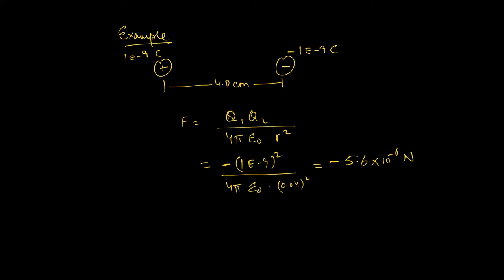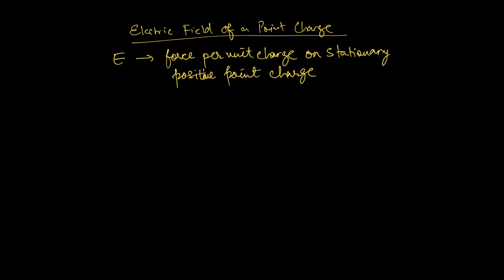Could we now go even deeper and look at the electric field of a single point charge? Let's start with a reminder that the electric field strength — which we covered in the first video of this chapter — is defined as the force per unit charge on a stationary positive point charge. So how can we now calculate, in terms of an equation, what this means?